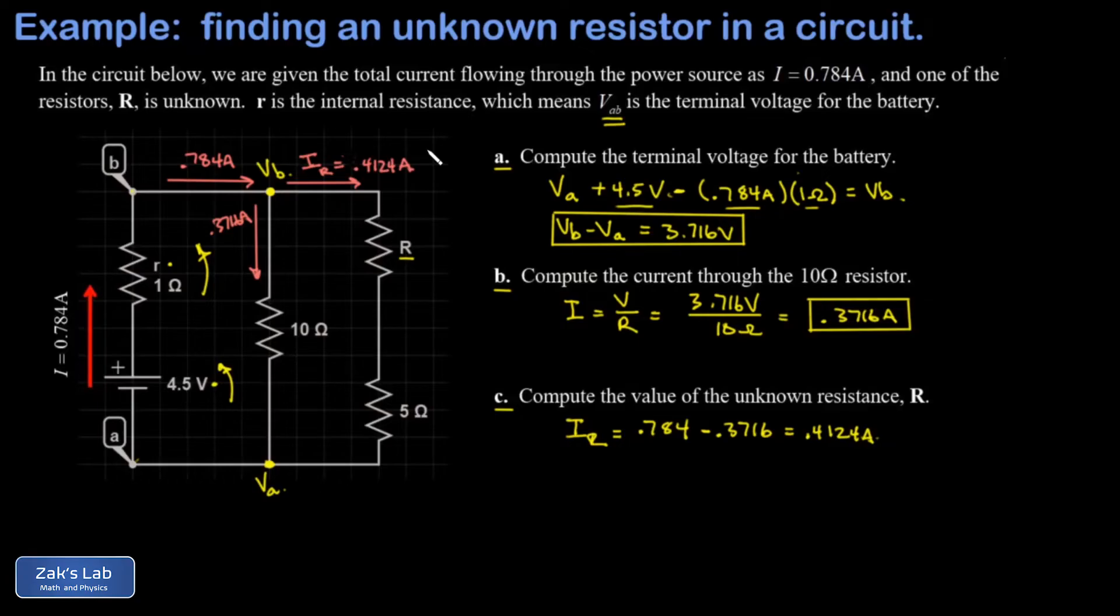Now, the reason this is useful for finding our unknown resistance R is that I have the potential difference across that right branch. It's that same 3.716 volts, because again, we're just directly connected by wire to nodes A and B at the top and bottom of this branch.